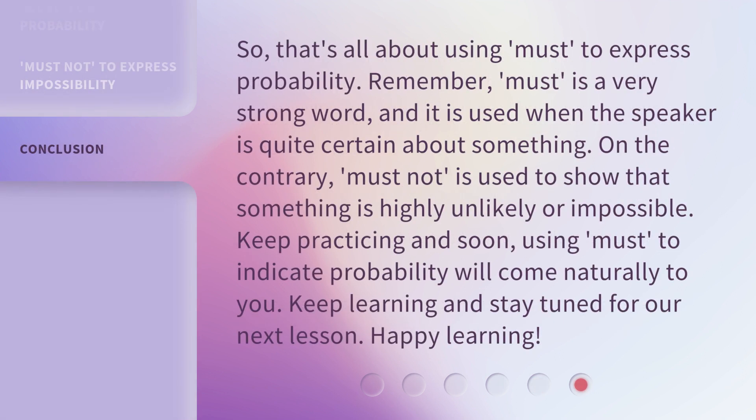So, that's all about using 'must' to express probability. Remember, 'must' is a very strong word and it is used when the speaker is quite certain about something. On the contrary, 'must not' is used to show that something is highly unlikely or impossible. Keep practicing and soon, using 'must' to indicate probability will come naturally to you. Keep learning and stay tuned for our next lesson. Happy learning!